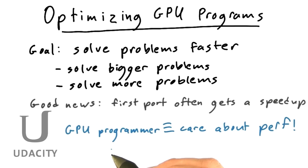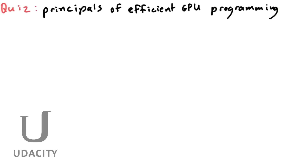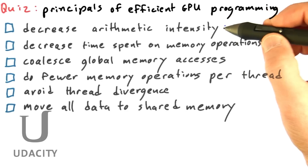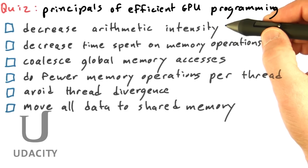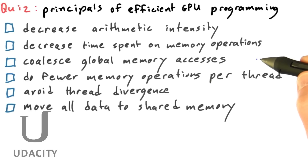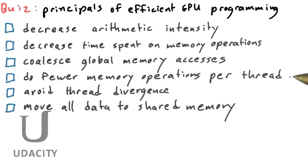So in this unit we're going to talk about how to optimize GPU programs. Cast your mind back to Unit 2, where we talked about some basic principles of efficient GPU programming. Check which of these principles accurately correspond to things we talked about in Unit 2. Do we want to decrease arithmetic intensity? Do we want to decrease the time spent on memory operations per thread? Do we want to coalesce global memory accesses? Do we want to do fewer memory operations per thread? Do we want to avoid thread divergence?